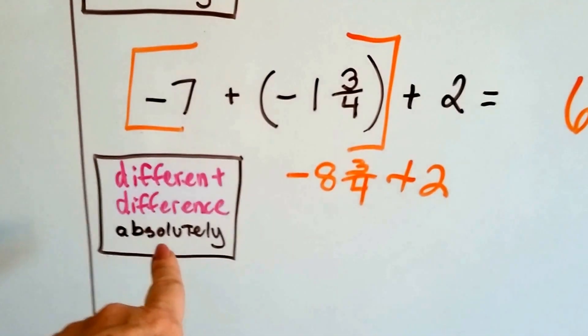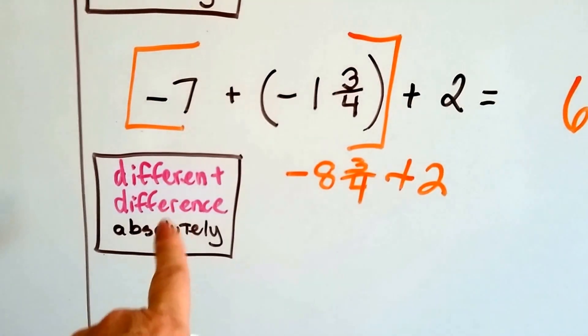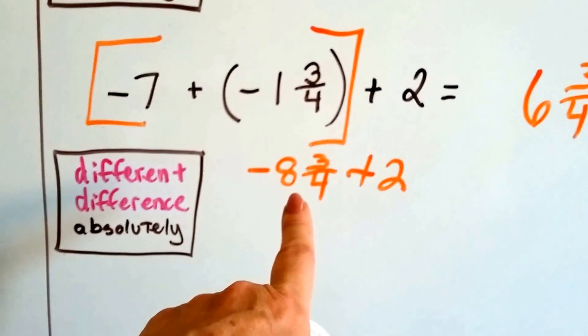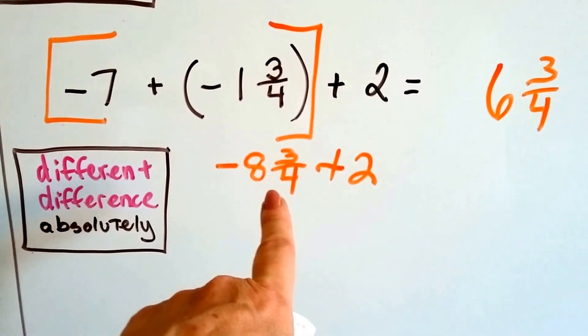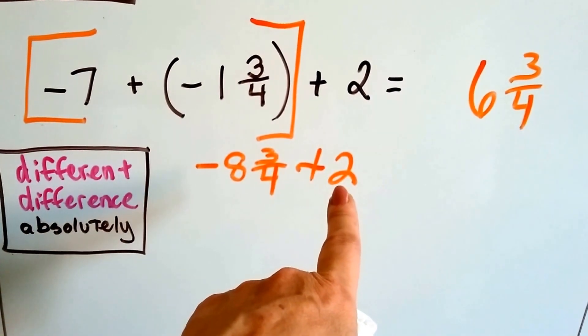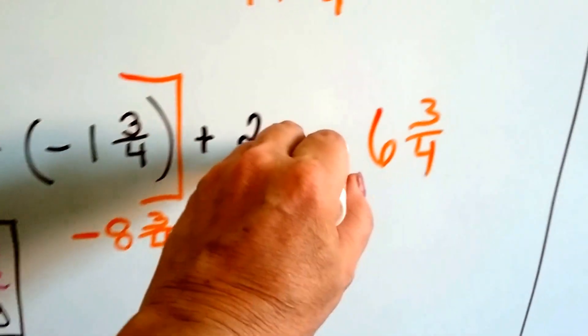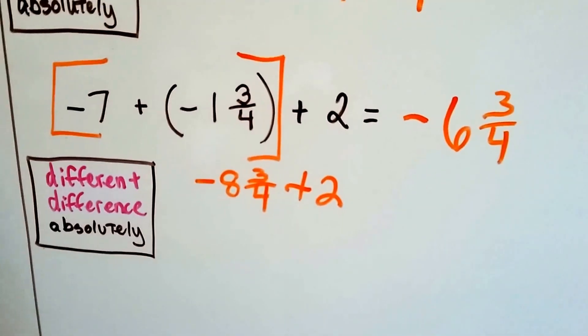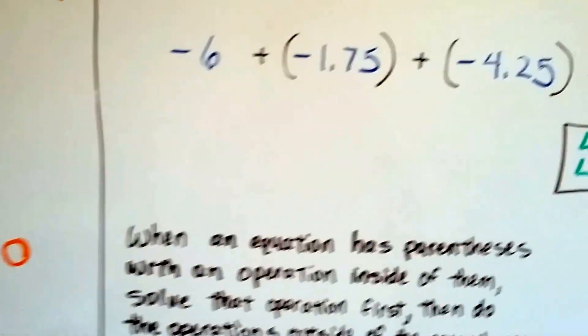We take the one with the largest absolute value, so it's different, difference, absolutely. And the one that's farthest from zero is the 8 and 3 fourths. That's way farther than the 2 is, isn't it? And it's a negative, so we have a negative 6 and 3 fourths. See? How about this one?